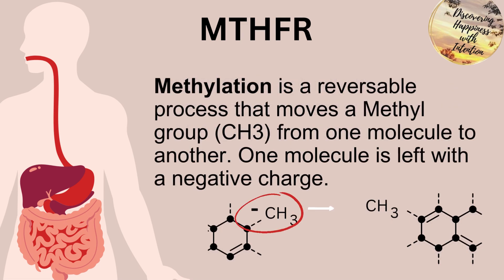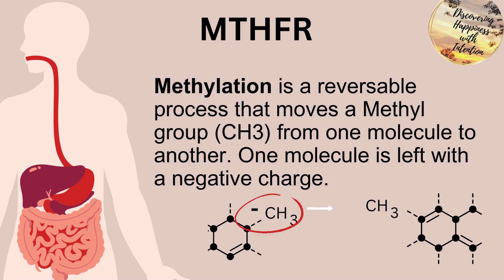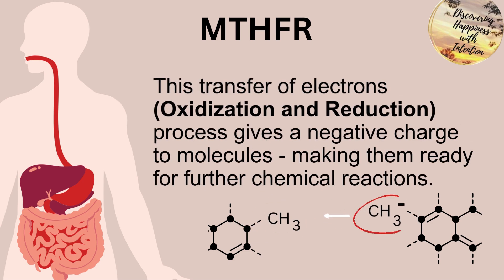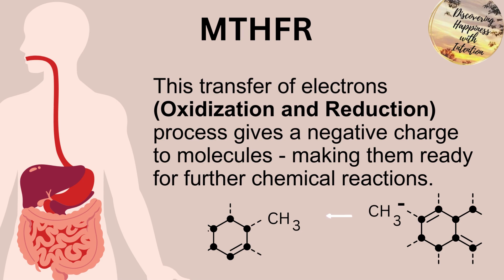Methylation itself is a reversible process that moves a methyl group — carbon and three hydrogens — from one molecule to another. And when this happens, it leaves one molecule with a negative charge. So this transfer of electrons, called oxidation and reduction, gives one of the molecules that negative charge and makes it ready for further chemical reactions.